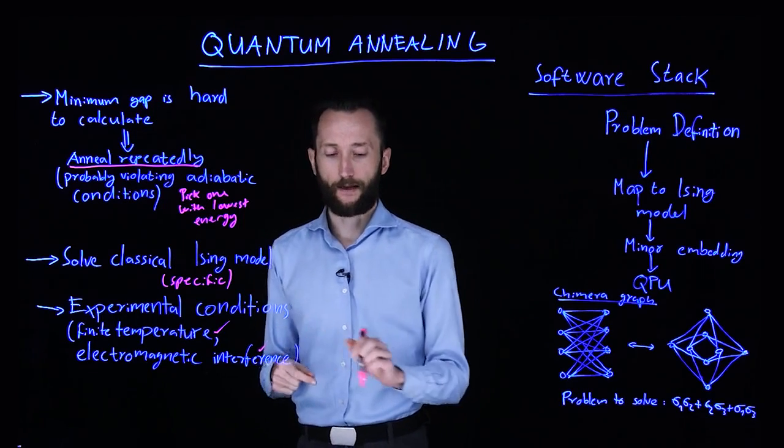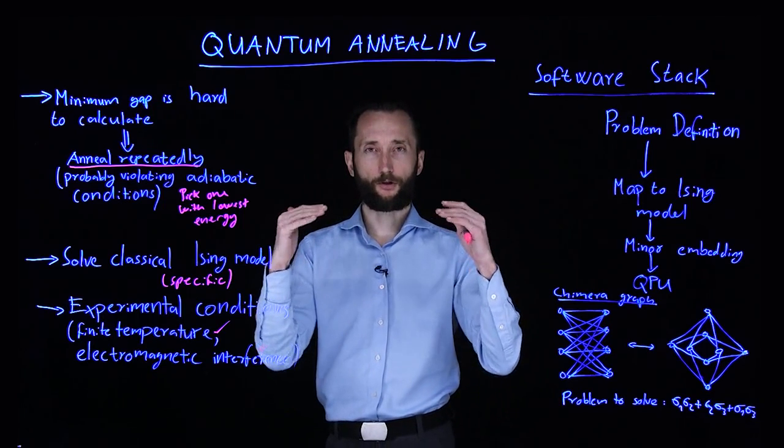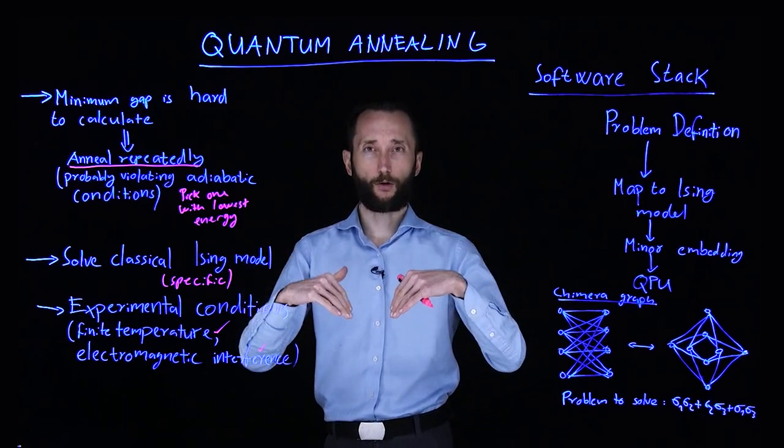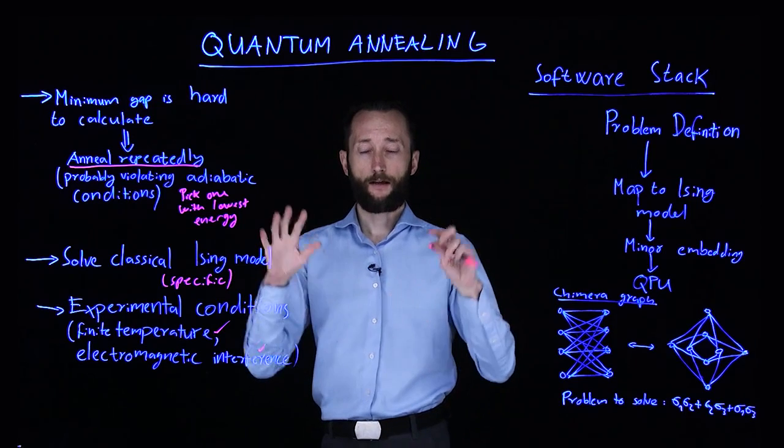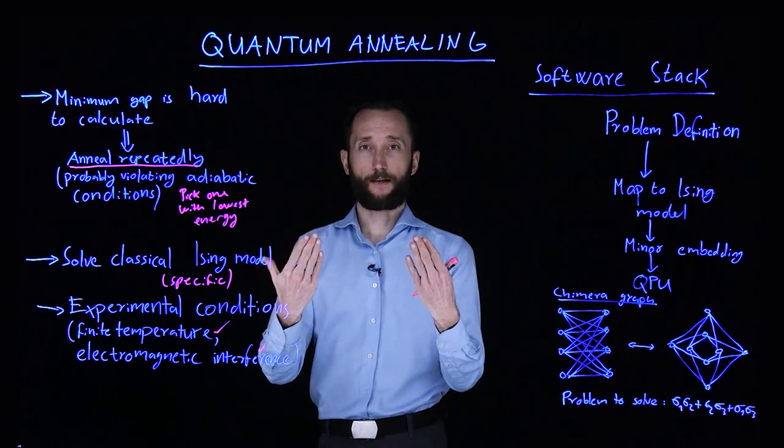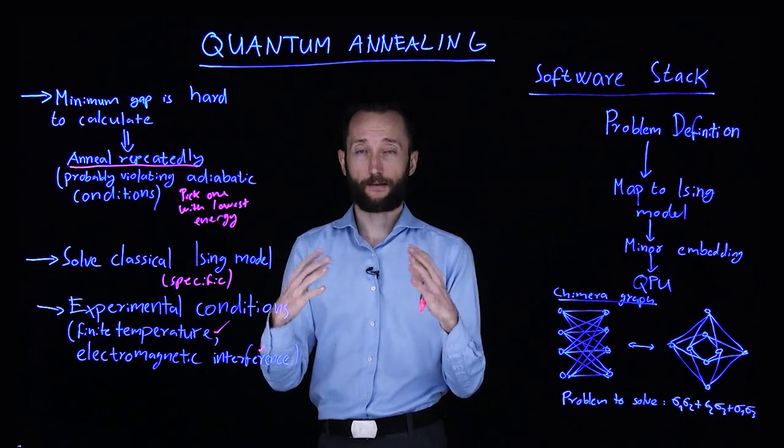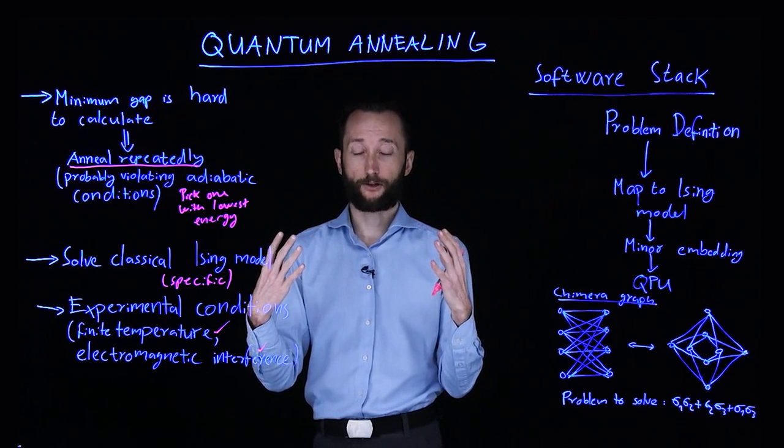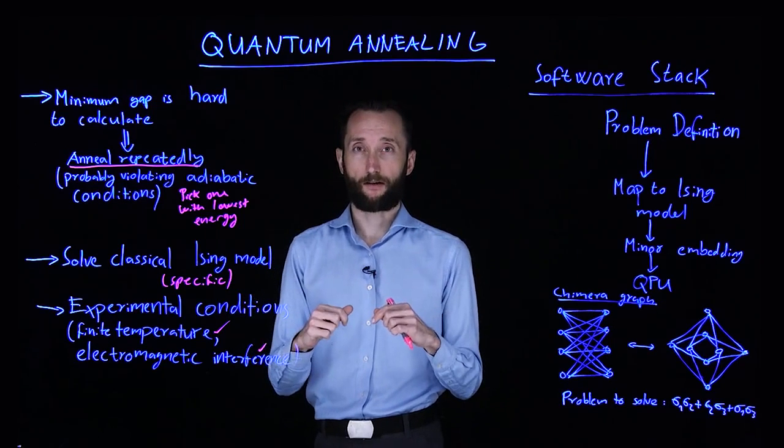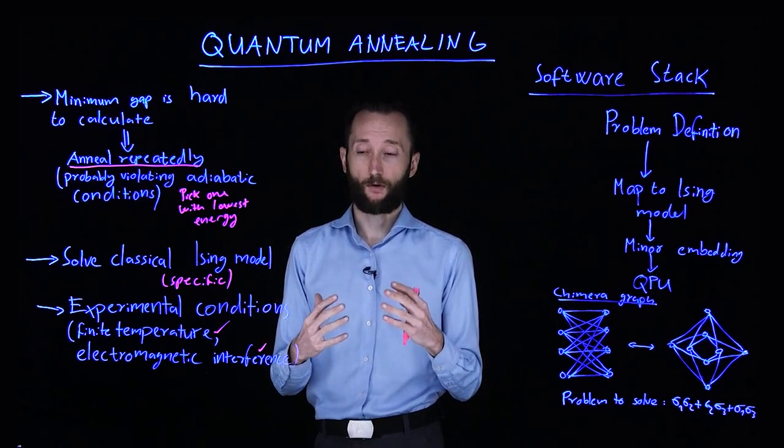And then there is this problem that the electronic control that goes into the actual quantum chip interferes with the calculations. So the machine itself sits in a big box, which is a Faraday cage.